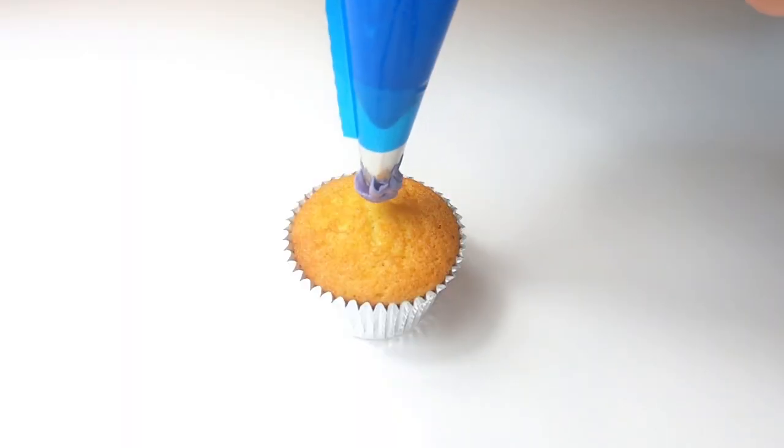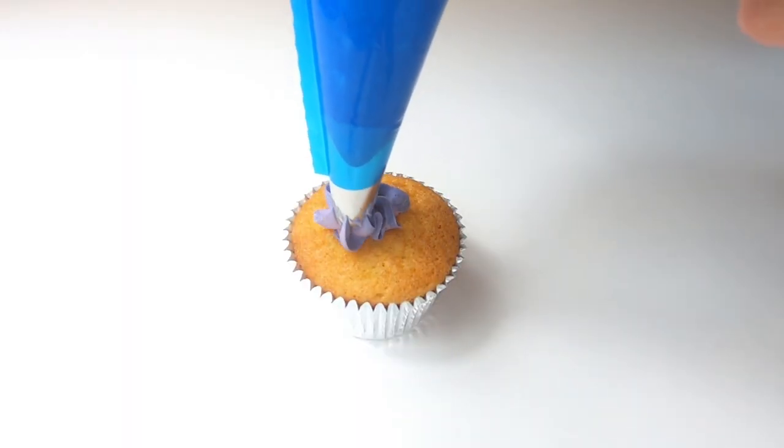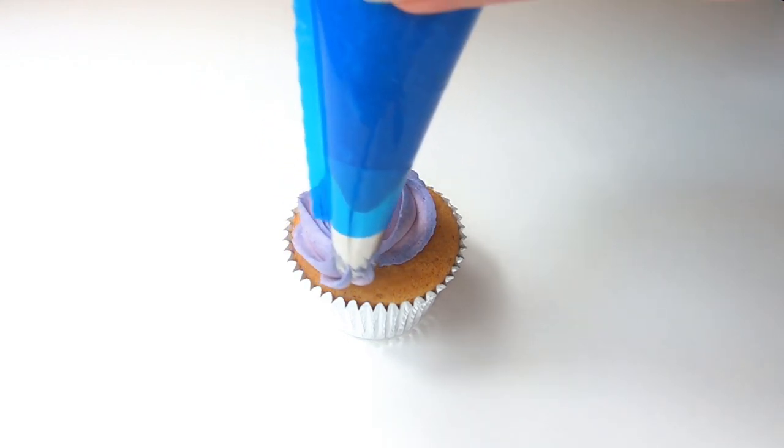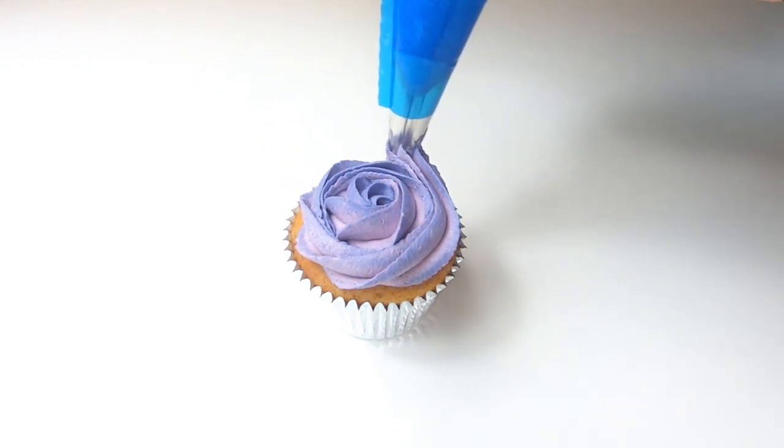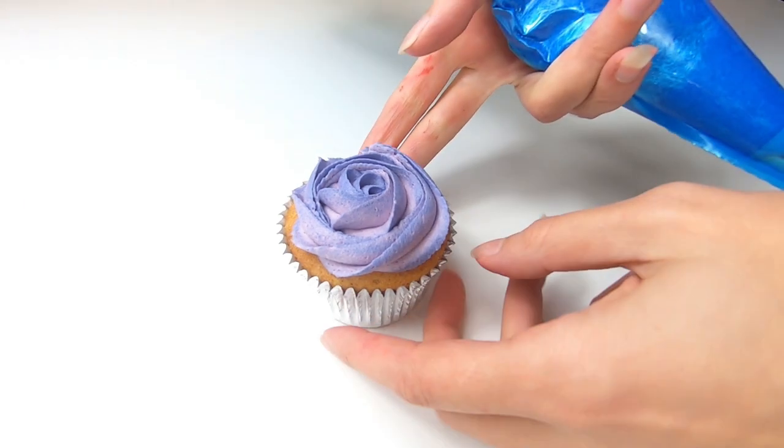To pipe your buttercream rose, start in the center of the cupcake and move your way around to the outside of the cupcake, slightly overlapping the previous swirl and then move away at the end.